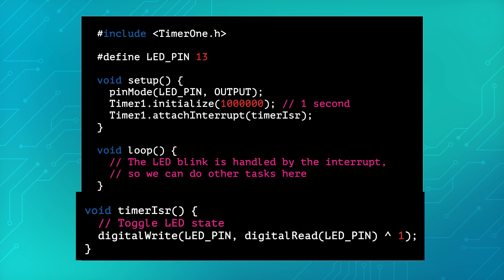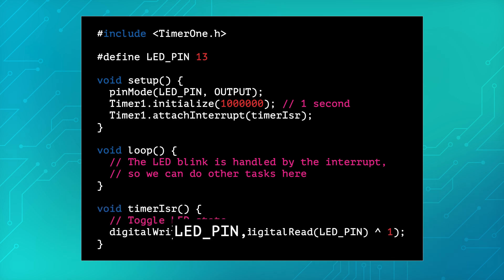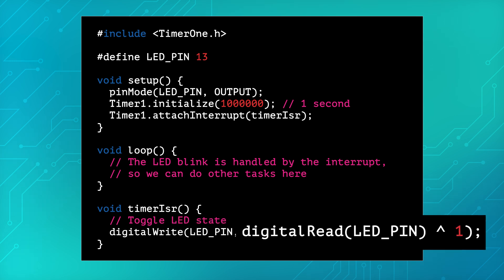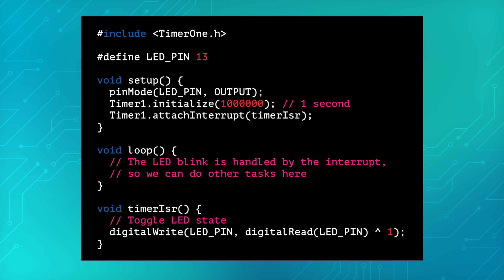Within the digitalWrite function, the first parameter LED_pin refers to the pin where the LED is connected. In the second parameter, I provided the state of the LED using a bitwise operator. This code reads the current state of the LED, which can be either HIGH or LOW, represented by 1 or 0 respectively, and then uses the XOR bitwise operator to toggle its state.